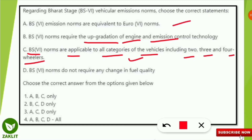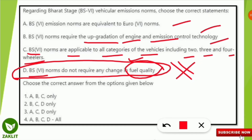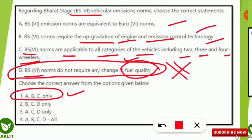Statements 1, 2, and 3 are correct. The fourth statement — that BS6 norms do not require any change in fuel quality — is incorrect, because according to BS6 norms we need to change fuel quality to prevent harmful emissions. So option D is wrong, and the correct answer is A, B, C only — option number 1.